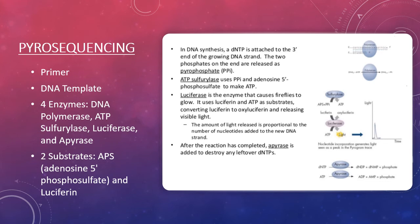Remember, pyrosequencing is sequencing by synthesis. So, in DNA synthesis, a DNTP is attached to the 3' end of the growing DNA strand. The two phosphates on the end are released as pyrophosphate, or PPI. ATP sulfurylase uses pyrophosphate and APS, adenosine 5' phosphosulfate, to make ATP.